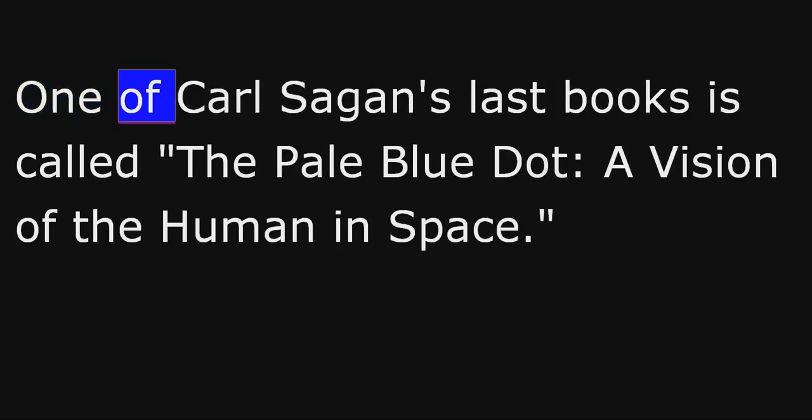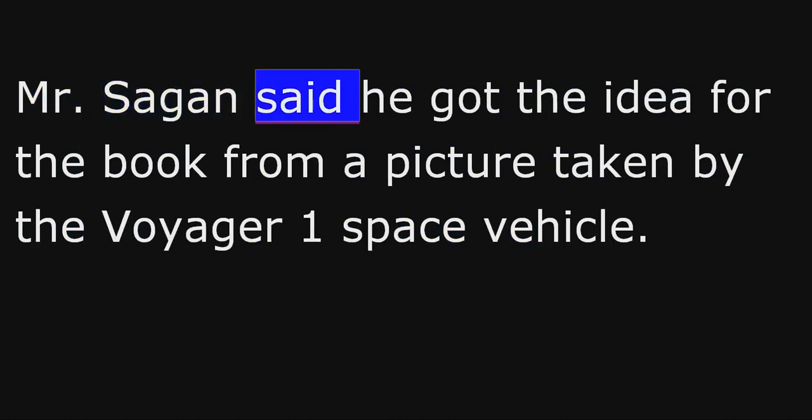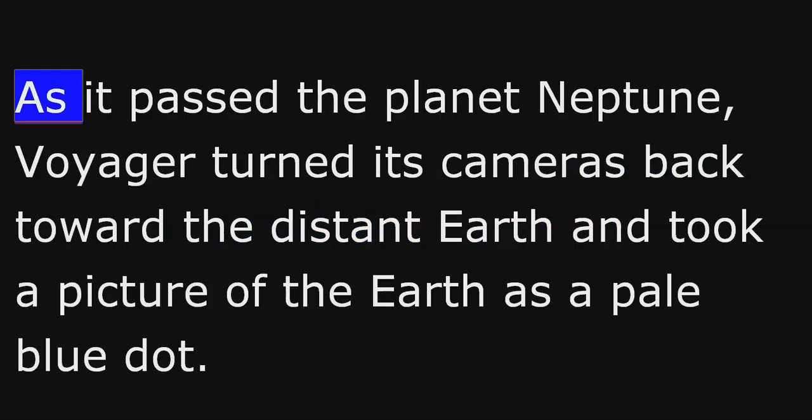One of Carl Sagan's last books is called The Pale Blue Dot, A Vision of the Human Future in Space. Mr. Sagan said he got the idea for the book from a picture taken by the Voyager 1 space vehicle. As it passed the planet Neptune, Voyager turned its cameras back toward the distant Earth and took a picture of the Earth as a pale blue dot.